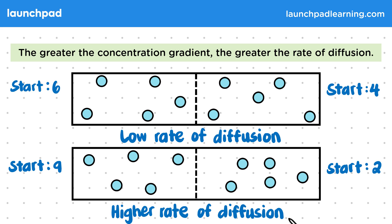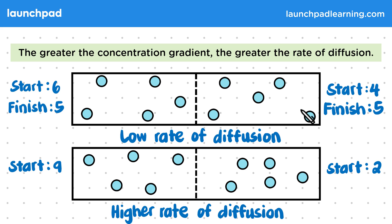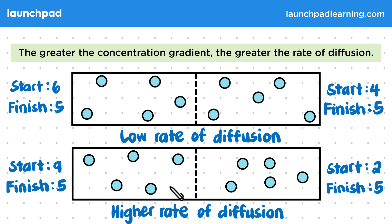Now that diffusion has occurred in both boxes, let's look at the final concentrations on either side of the membrane. We started with six particles and finished with five on one side, and started with four and finished with five on the other — the final concentration is the same on both sides. The same thing has occurred in the bottom box. In exam questions you might be given similar examples and asked to identify whether particles will diffuse more quickly or slowly.